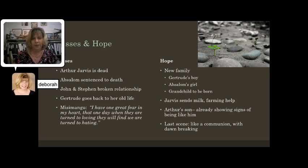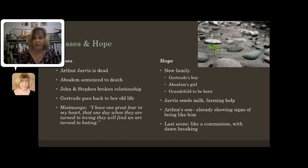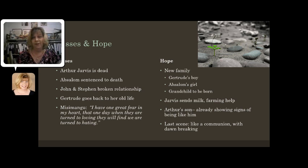Finally, the novel closes in book three with this comparison of losses and of hope. There's been significant damage in this story: Arthur Jarvis is dead, Absalom was sentenced to death, John and Stephen have broken their relationship and this brotherhood is not going to be mended. Gertrude doesn't make it — she goes back to her old way of life, presumably to alcohol, drugs, and prostitution. And Msimangu even prophesizes: 'I have one great fear in my heart, that one day when they are turned to loving, they will find we are turned to hating.'